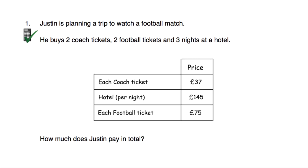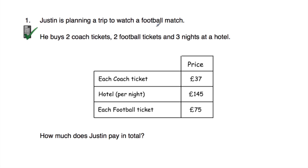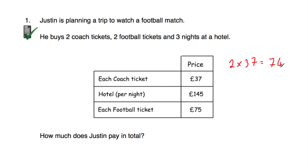Question number one: Justin has planned a trip to watch a football match, and he buys two coach tickets, two football tickets, and three nights at a hotel. The question says, how much does Justin pay in total? This is a calculator question. So let's start by looking at the coach tickets — he buys two coach tickets and they cost £37 each. Two multiplied by £37 gives us £74 for the coach tickets.